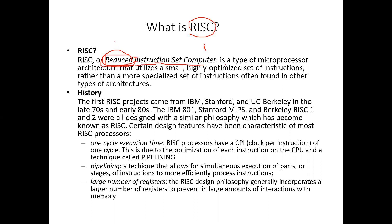RISC is a type of microprocessor architecture that utilizes a small, highly optimized set of instructions, rather than the more specialized set of instructions often found in other types of architectures such as CISC.